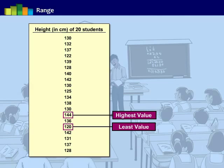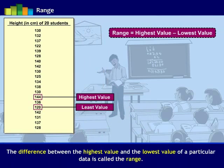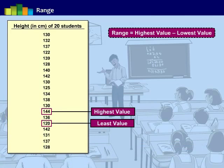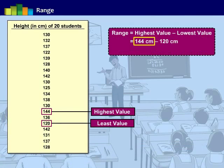Now, the teacher wants to know in which range the measure of height belongs. So to find the range for this, he notes the formula as the range is the difference between the highest and the lowest values. Hence, range of the heights of 20 students would be 144 centimeter minus 120 centimeter. So we get range as 24 centimeter.